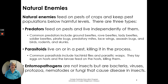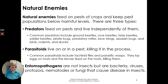You should also identify natural enemies — sometimes called beneficial insects — that can keep pests in your crops in check. Natural enemies feed on pests of crops and keep pest populations below harmful levels. There are three types: predators, which feed on pests and live independently; parasitoids, which live on or in a pest and kill it in the process; and entomopathogens — bacteria, viruses, protozoa, nematodes, or fungi that cause disease in insects. If you have enough natural enemies controlling the pests, perhaps other controls aren't needed.